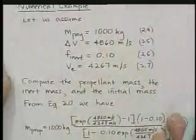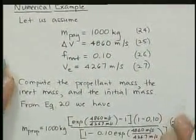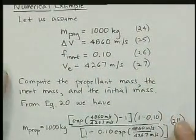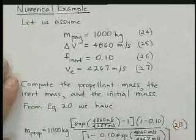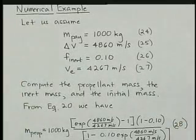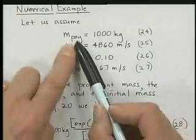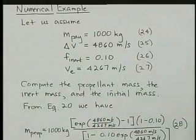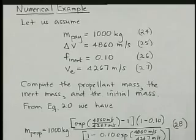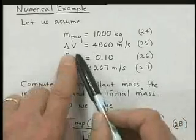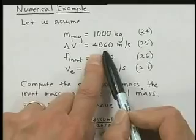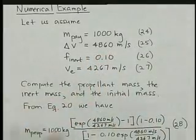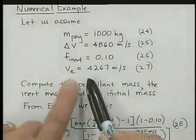Okay, so let's do a numerical example. And there's a similar problem in SPAD. So I'm following that fairly closely so you can read parts of SPAD and confirm these numbers. So let's say a payload of 1,000 kilograms. In SPAD they use 1 kilogram as their example. I like to use bigger numbers that are more representative of the real thing. Delta V, let's assume we need 4,860 meters per second, that the inert mass is about 10 percent.